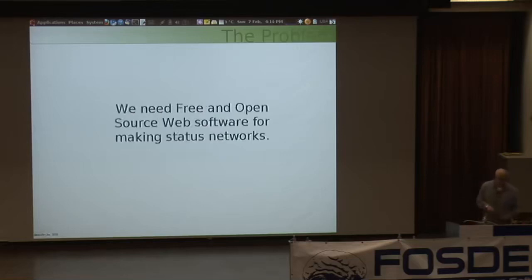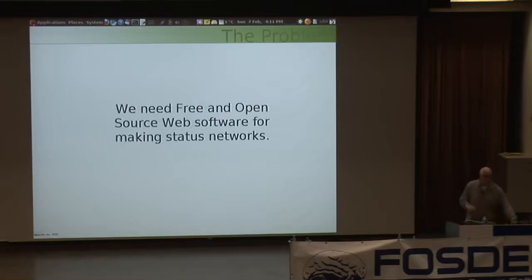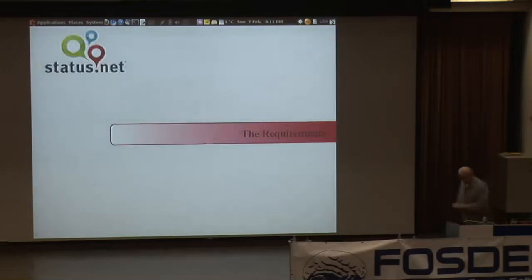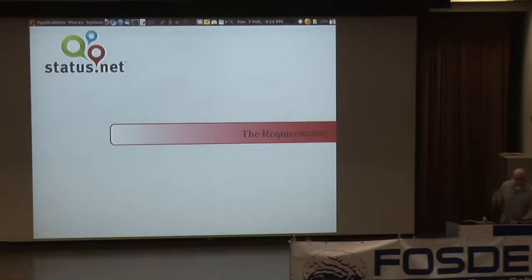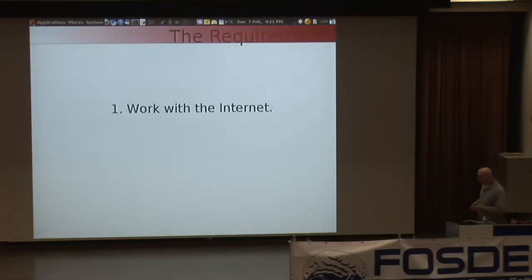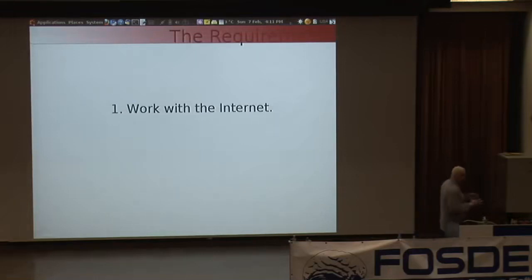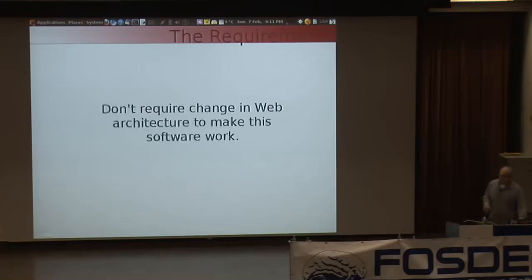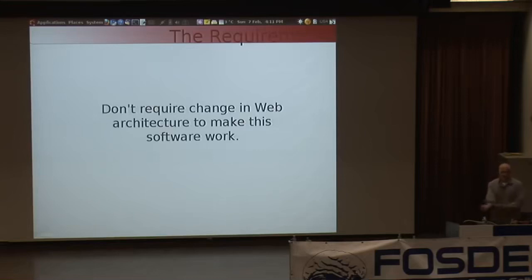We need free and open source web software for making status networks. I'm going to lay into some of the requirements. First and foremost, any kind of social status software has to work with the internet as it lives right now. I don't think we can require changes in web architecture just to make our software work. This is about playing catch-up, and we need to work with the internet as it is now, not try to make it change.